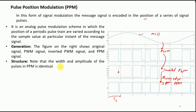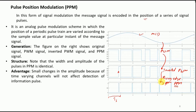In PPM, the width of all pulses is consistent, the amplitude is consistent — only the position of the pulse varies. This gives PPM a similar advantage to PWM: when transmitted over a time-varying channel, if the amplitude is perturbed, we can still recover the original message signal because information is stored in the position, not the amplitude.